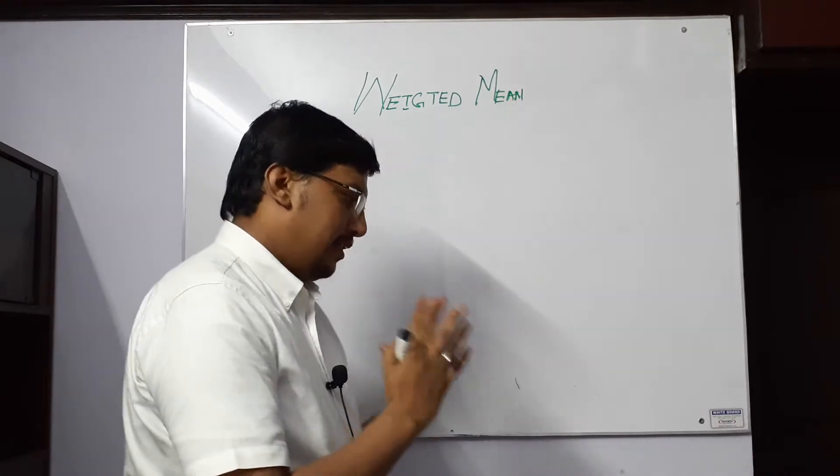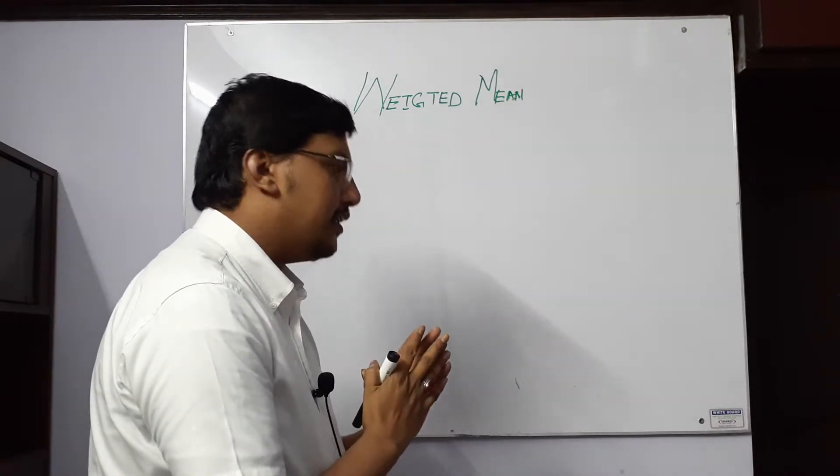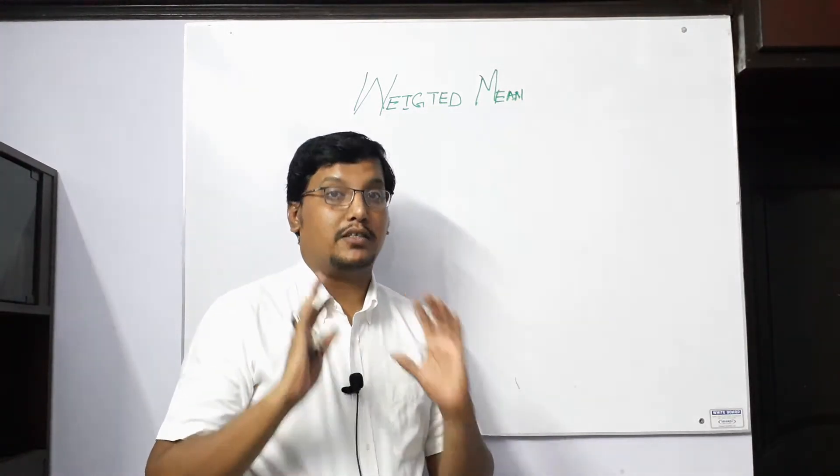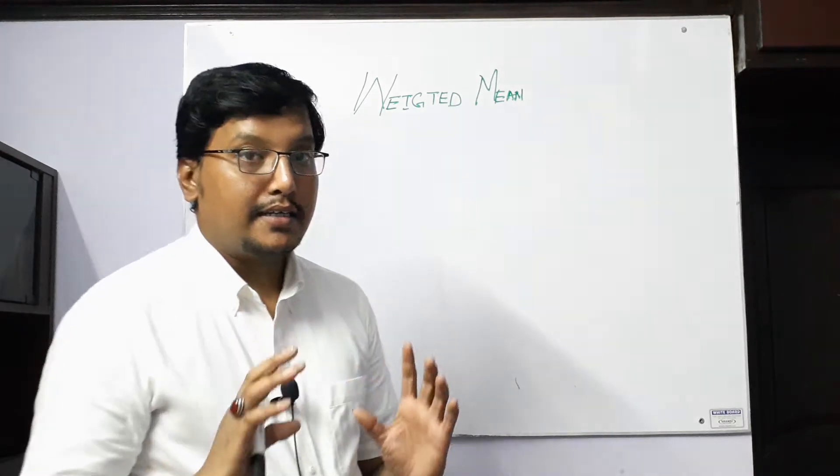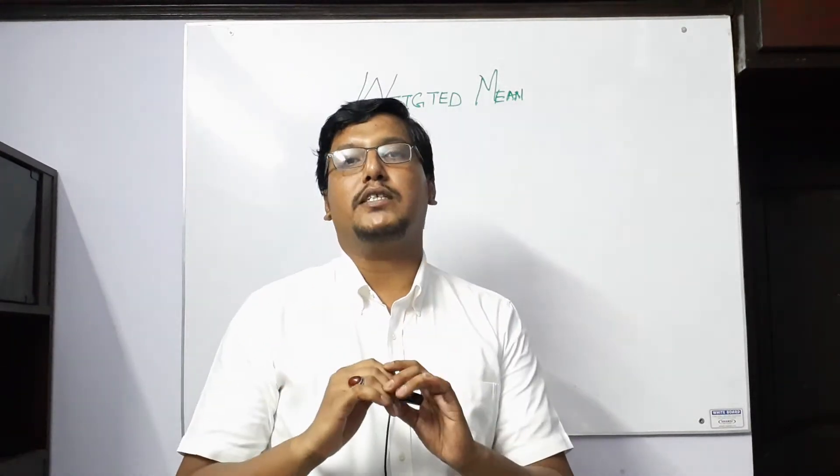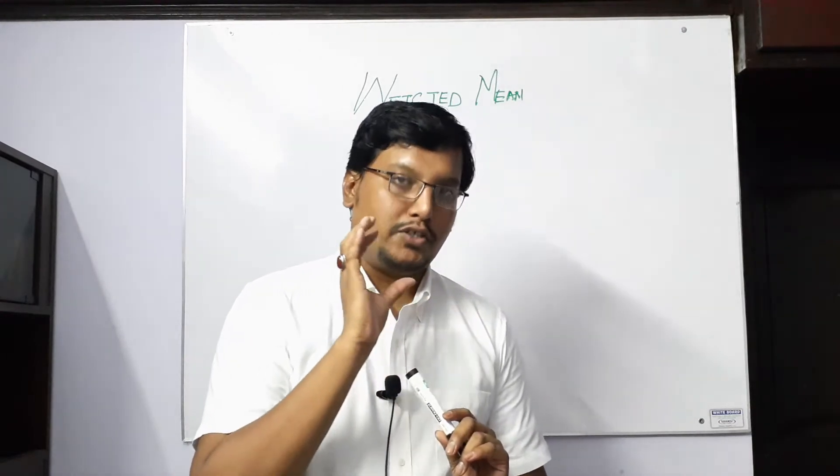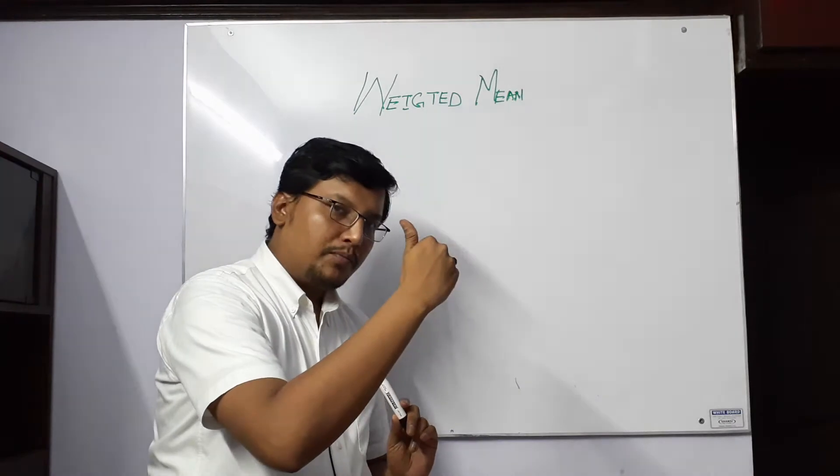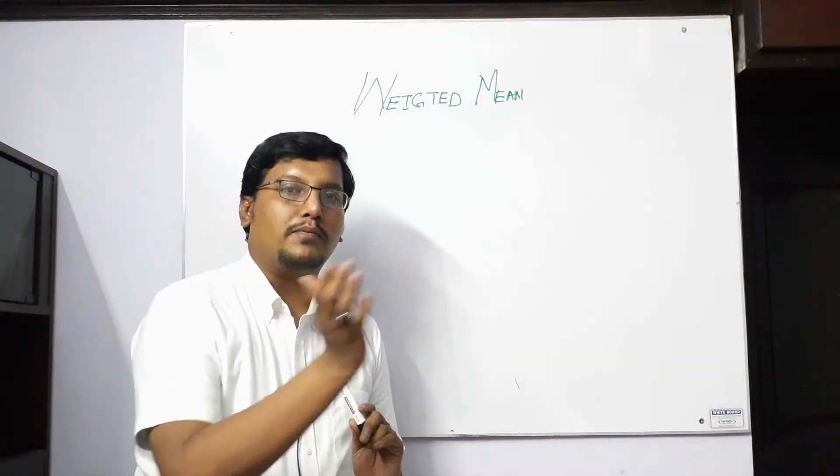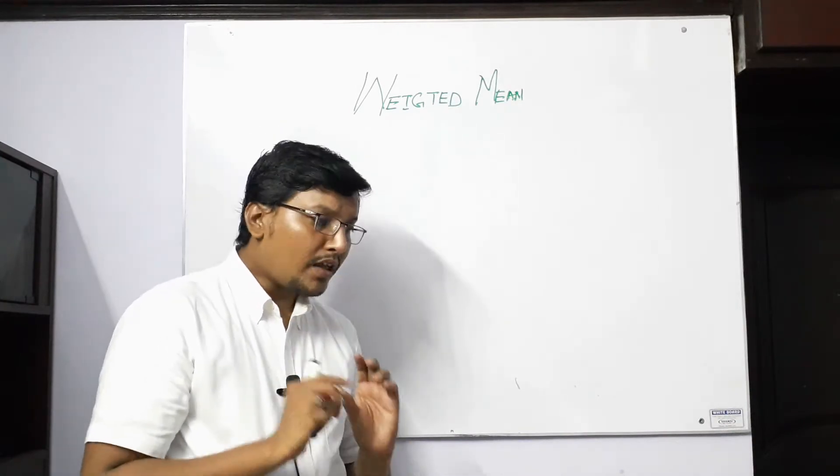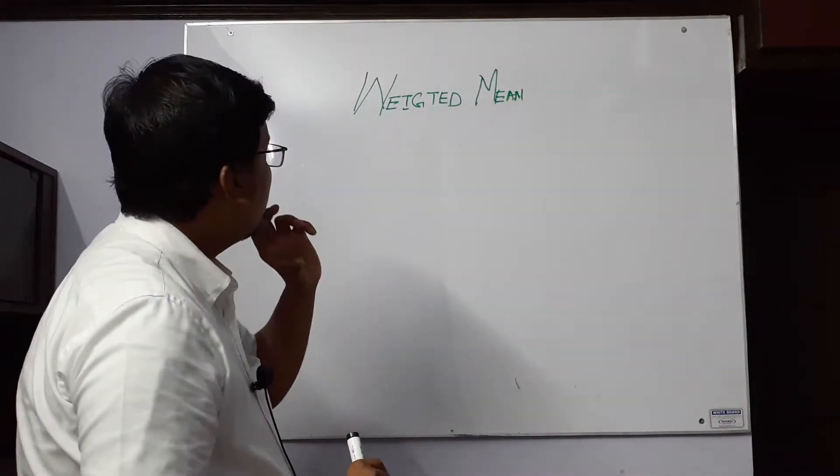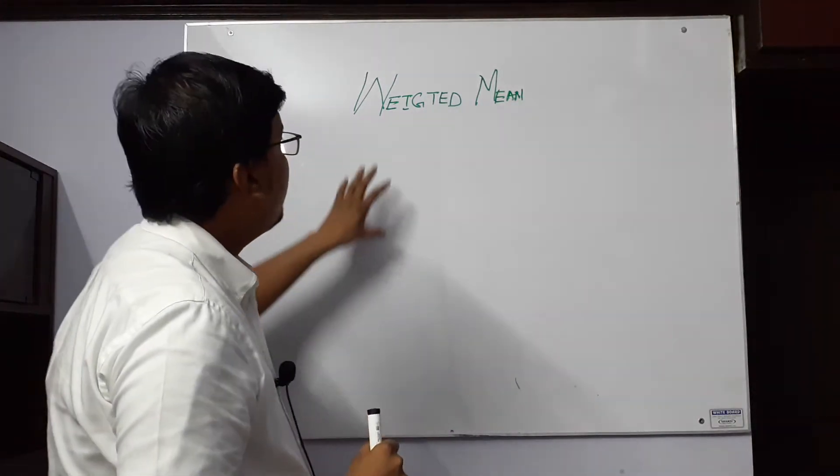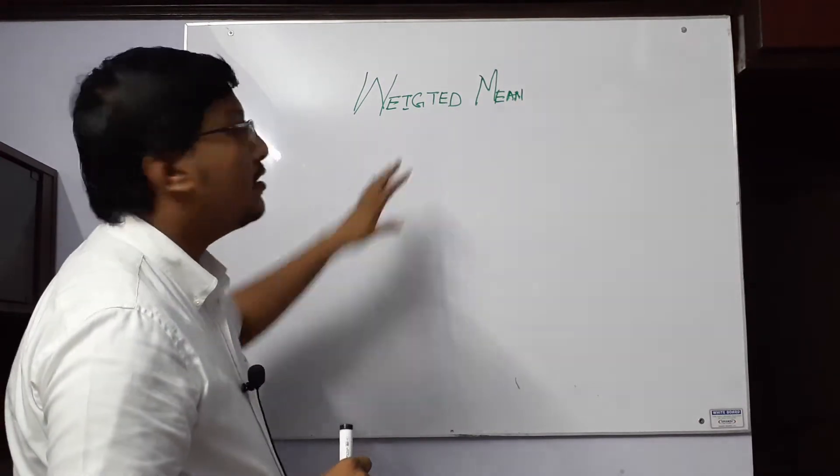First of all, we have studied in the last lecture that averages or means are calculated to find out the center of data. We need a central value, an average figure. For that purpose, we calculate means of different types. But most commonly and most useful mean is the arithmetic mean, which is applied in many places. This weighted mean is a little bit extension of that mean.